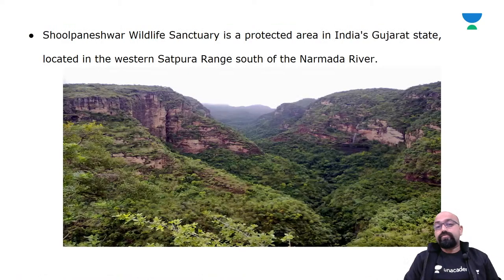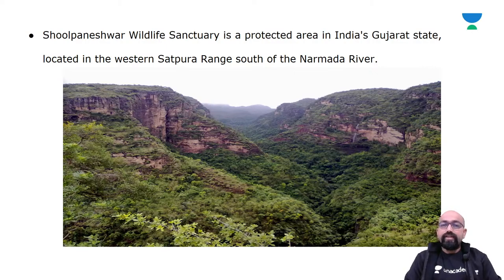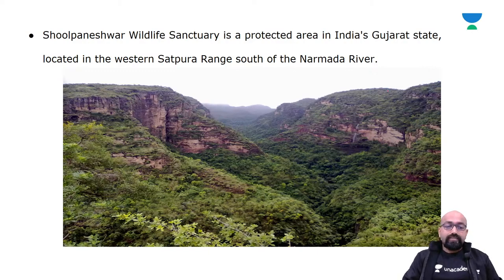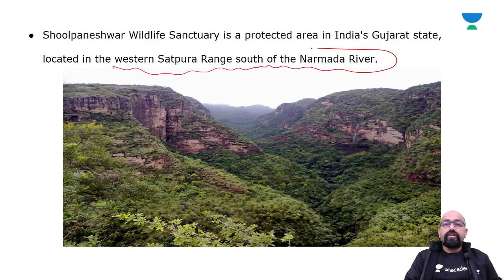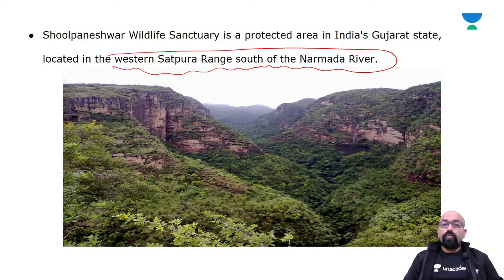We'll see where it is located. Shulpaneshwar Wildlife Sanctuary is a protected area in Gujarat State. It's located in the western Satpura Range, south of the Narmada River.